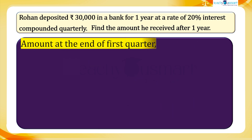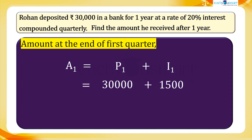Now the amount at the end of the first quarter: A1 equals P1 plus I1, equals 30,000 plus 1,500. That is, A1 equals 31,500 rupees. This is the principal for the second period.